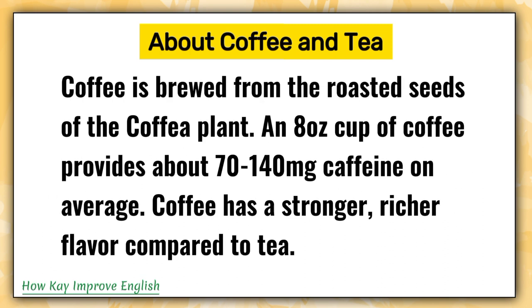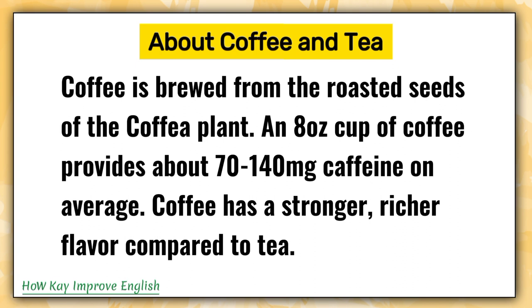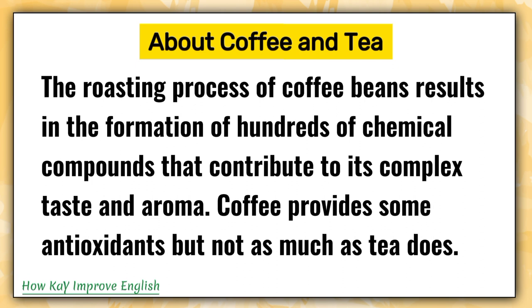Coffee is brewed from the roasted seeds of the coffea plant. Brewing refers to the process of extracting flavor, aroma, and other compounds from coffee beans by steeping them in hot water. An 8 oz cup of coffee provides about 70 to 140 mg caffeine on average. Coffee has a stronger, richer flavor compared to tea. The roasting process of coffee beans results in the formation of hundreds of chemical compounds that contribute to its complex taste and aroma.